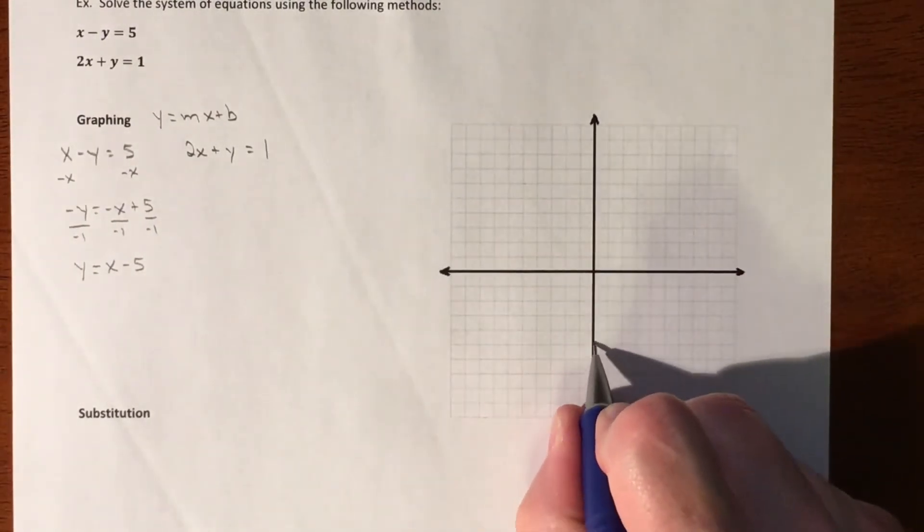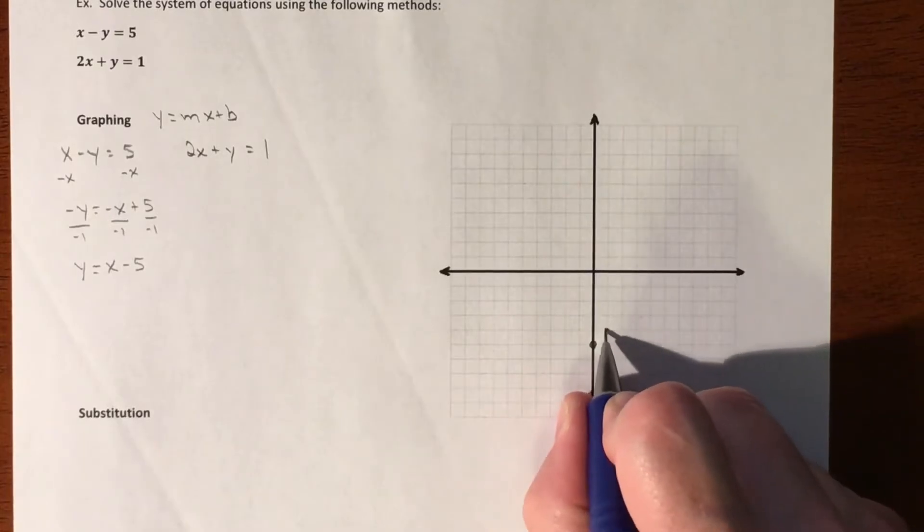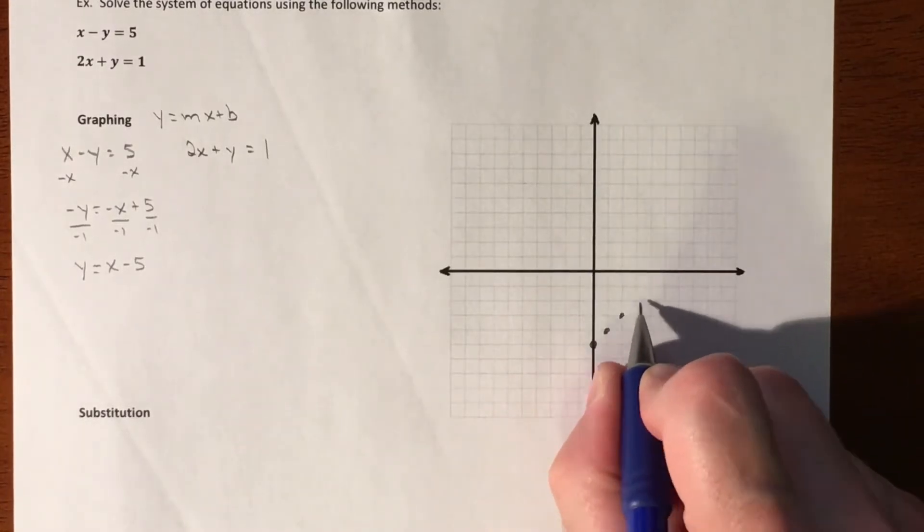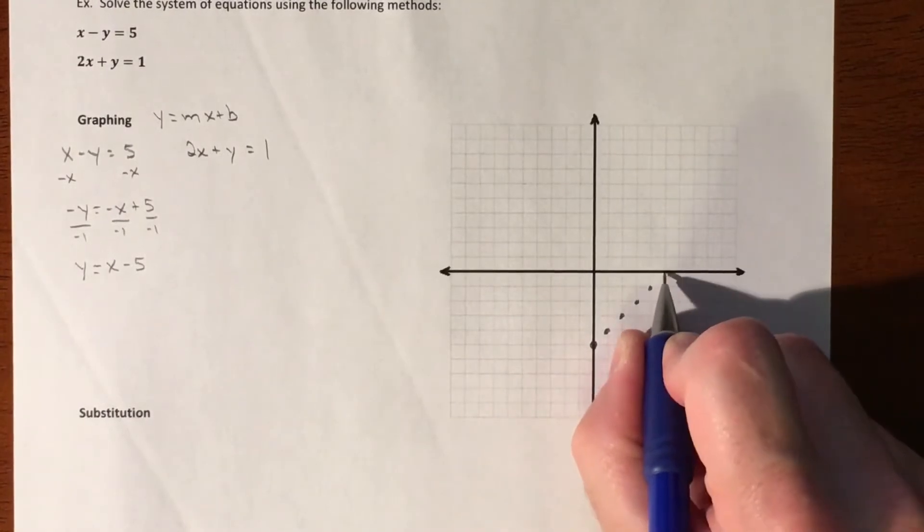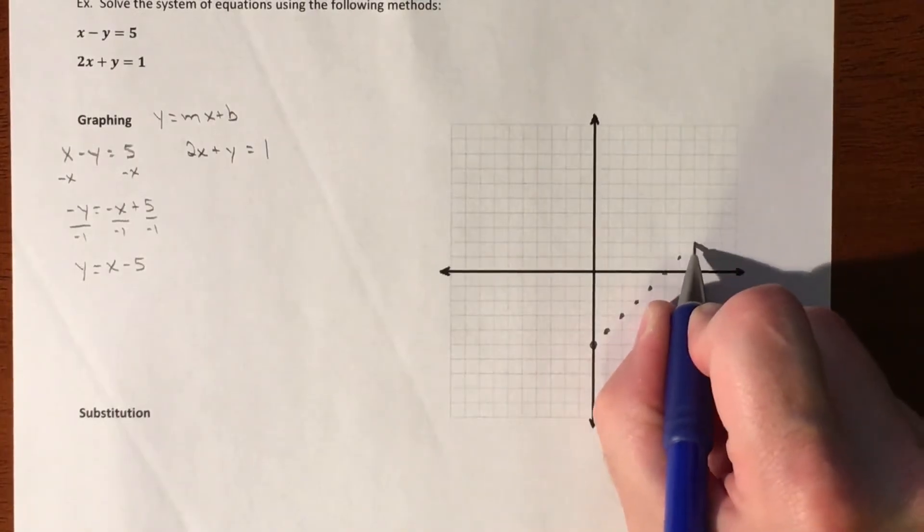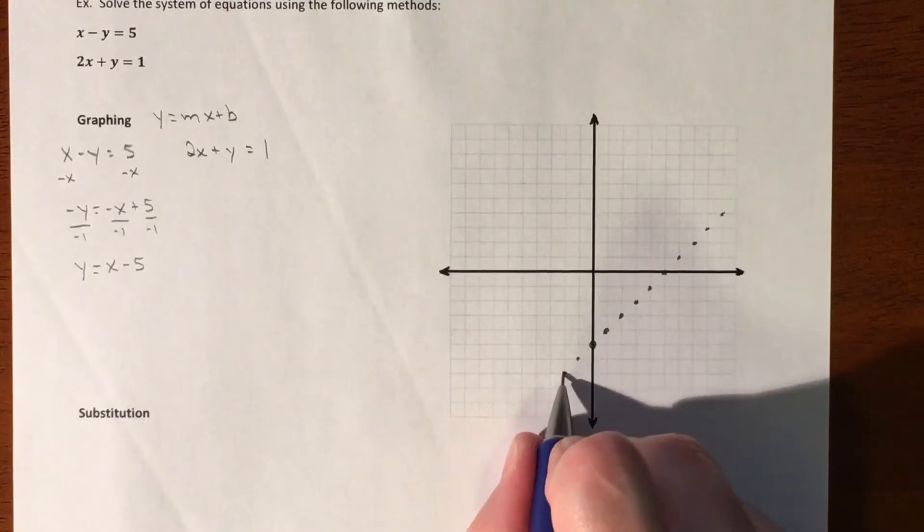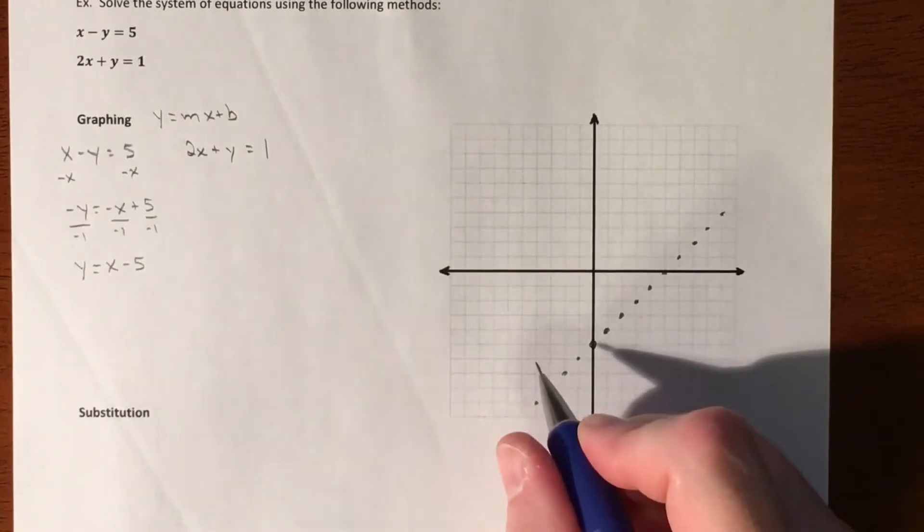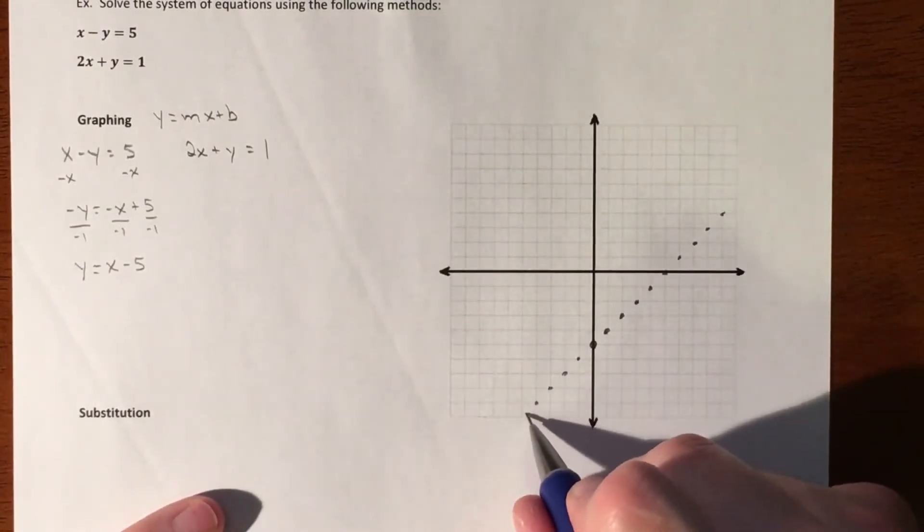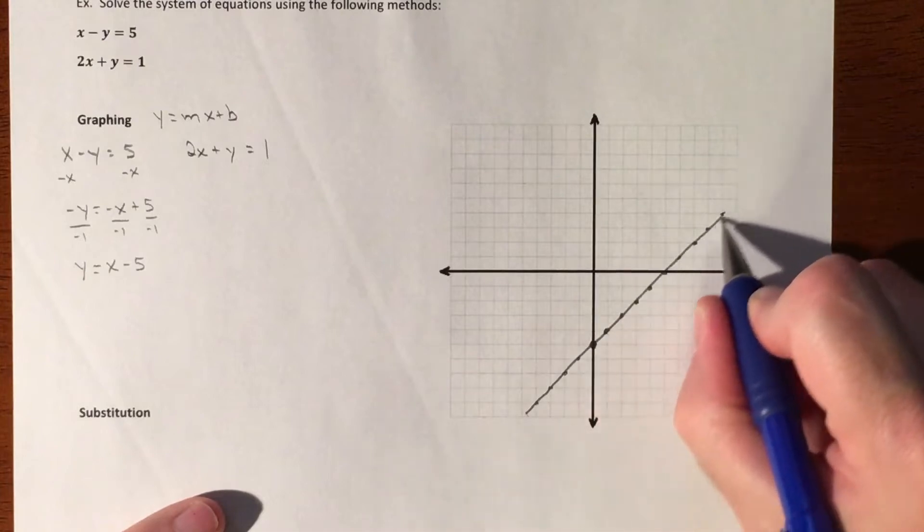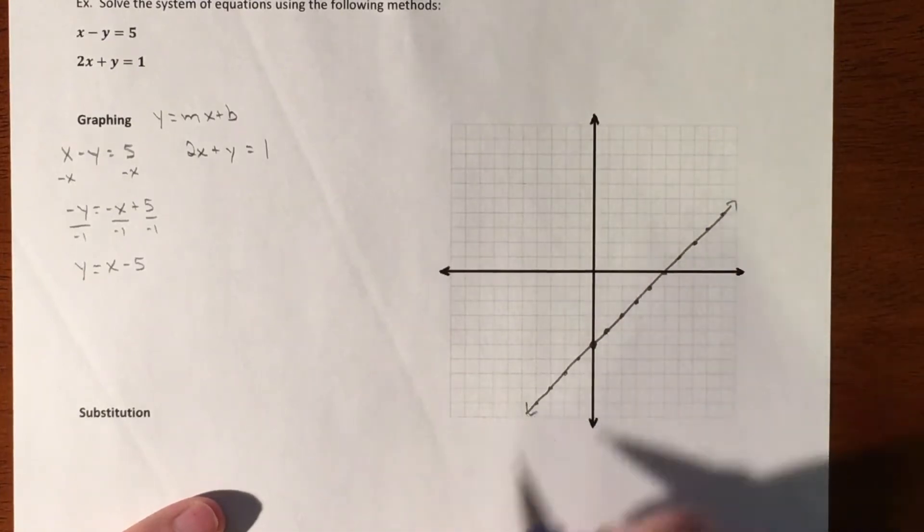So 1, 2, 3, 4, 5. And then it has a slope of 1. So I'm going to put as many points as I can, because I don't know where these lines are going to cross. So there we go. That's plenty. Okay, so there's our first graph.